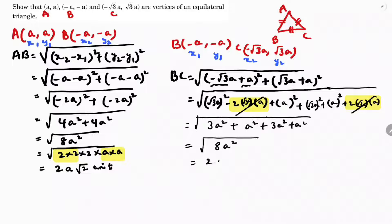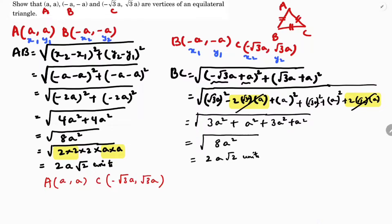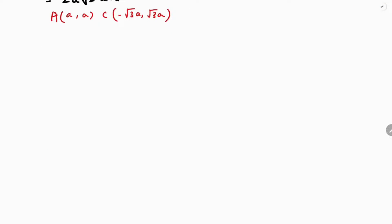Now I need to find the distance AC. Here A is (a, a) and C is (-√3a, √3a). Considering these as x₁, y₁ and x₂, y₂, I will find the distance AC using the formula: AC = √[(x₂ - x₁)² + (y₂ - y₁)²].